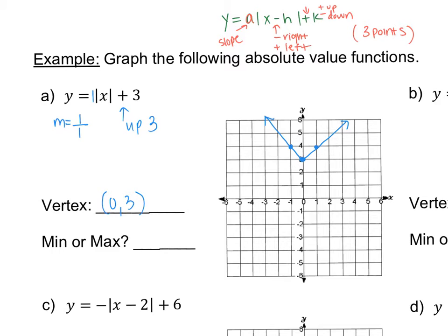First, figure out your shift. That will help you determine your vertex. Once you have your vertex, use the slope to figure out where the other two points are so you can connect the dots and make your V. Now, last but not least, it asks if the vertex is a min or a max. Using your intuition here,